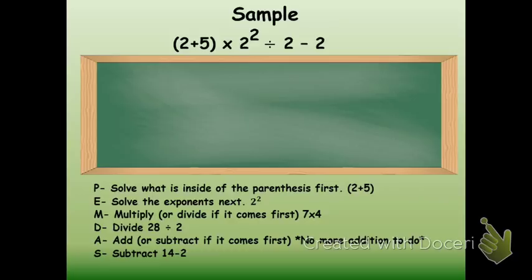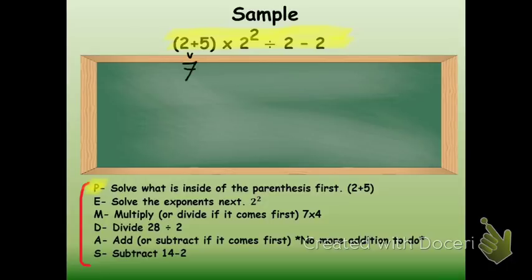We'll go and look at a problem now that requires we use the order of operations. Here's our sample right here. At the bottom of this page I've got the order of operations written out — PEMDAS. So first thing we do, we are going to start with the P, the parentheses, and we're going to solve what's in the parentheses first, which is 2 plus 5. That gives us a sum of 7. I'm going to rewrite everything else in that problem next to that 7. This will help me keep my problem organized. I did what's in the parentheses first and I'm going to put a little check mark next to that P.